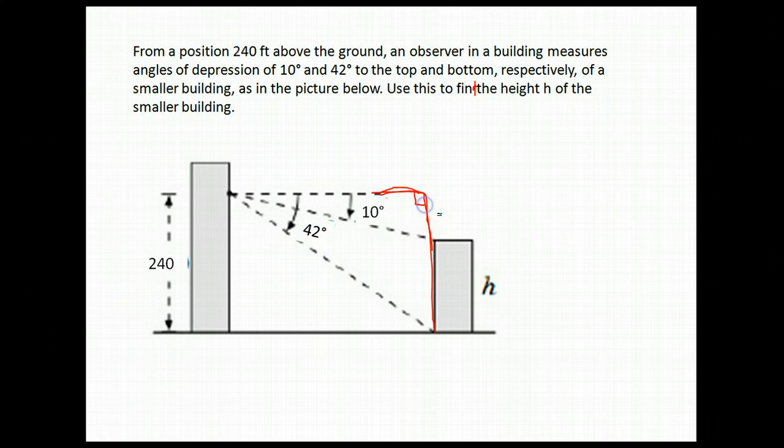We need to fill in what the different heights are. We know that this side, since it's even with this over here, is 240. But if we're dealing with just this section right here, it would be the full 240 minus the h. It's what's left over after you have the height of this building.